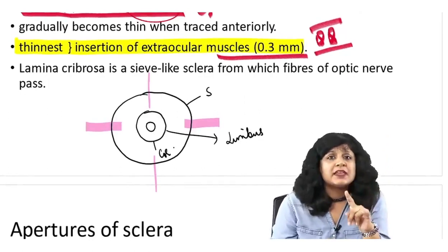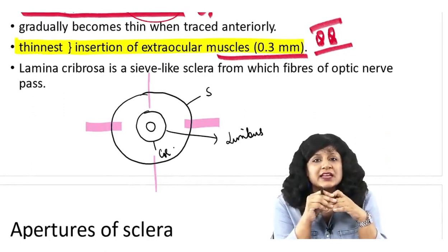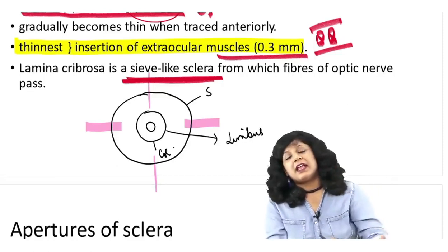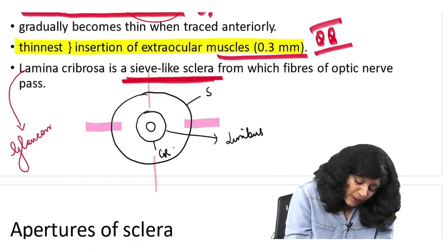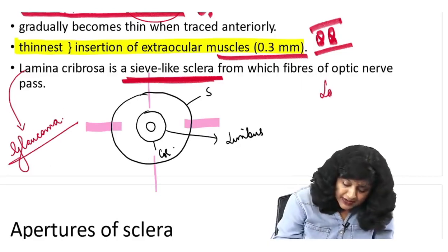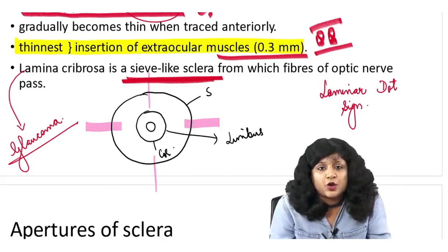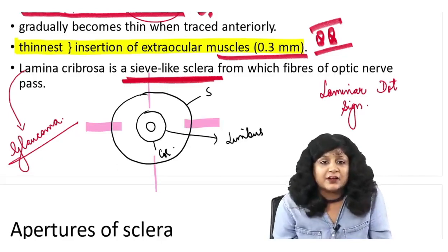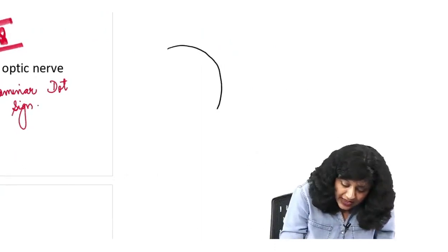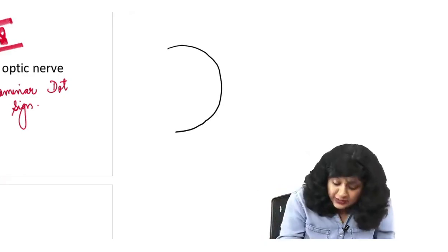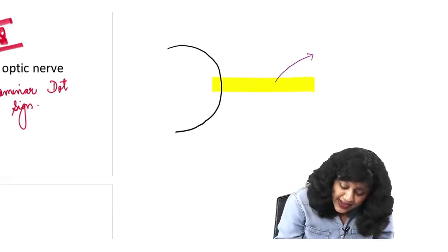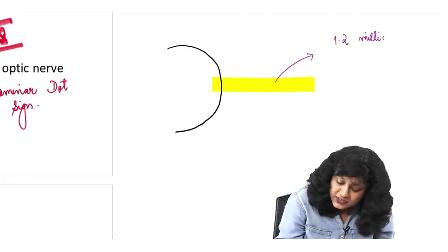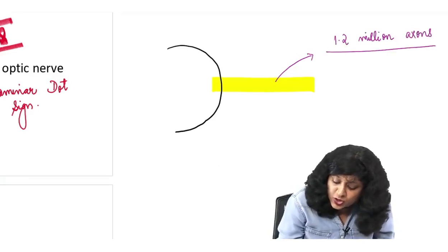Then we have the lamina cribrosa — a sieve-like structure. I always mention this lamina cribrosa in glaucoma. When we study glaucoma, we have a sign called the lamina dot sign. That is seen at the level of the lamina cribrosa. The lamina cribrosa is that part of the sclera through which the optic nerve fibers come out. One optic nerve has 1.2 million axons, and these many fibers are piercing the sclera and coming out.